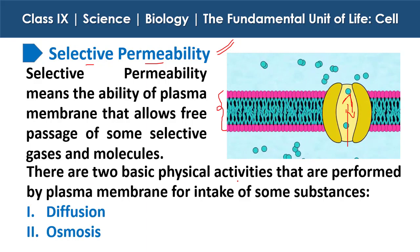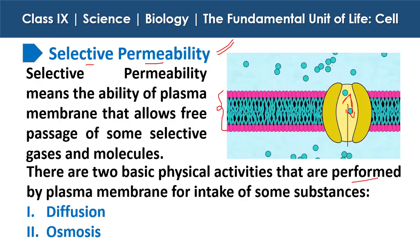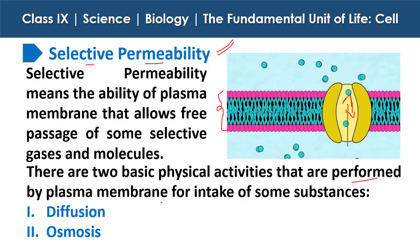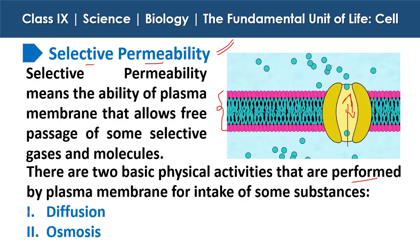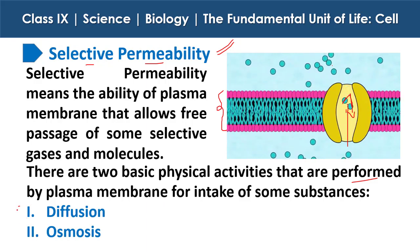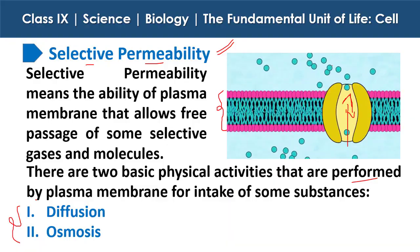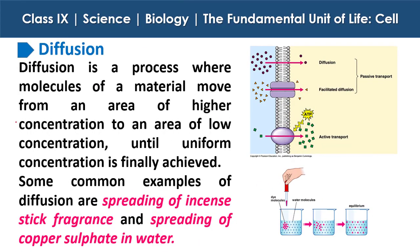There are two basic physical activities performed by the plasma membrane for intake of some substances: first is diffusion and second is osmosis. Diffusion is the process where molecules of a material move from an area of high concentration to an area of low concentration until uniform concentration is finally achieved.